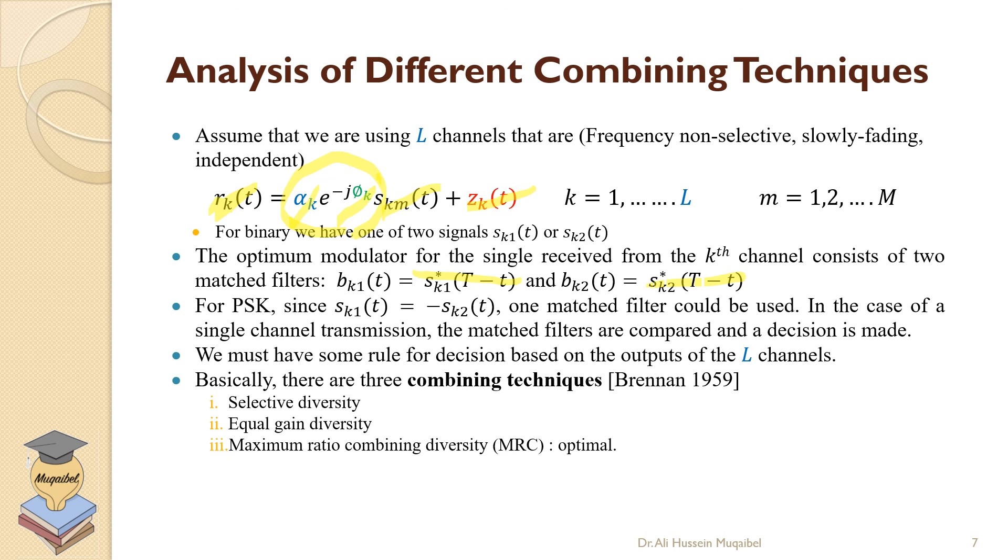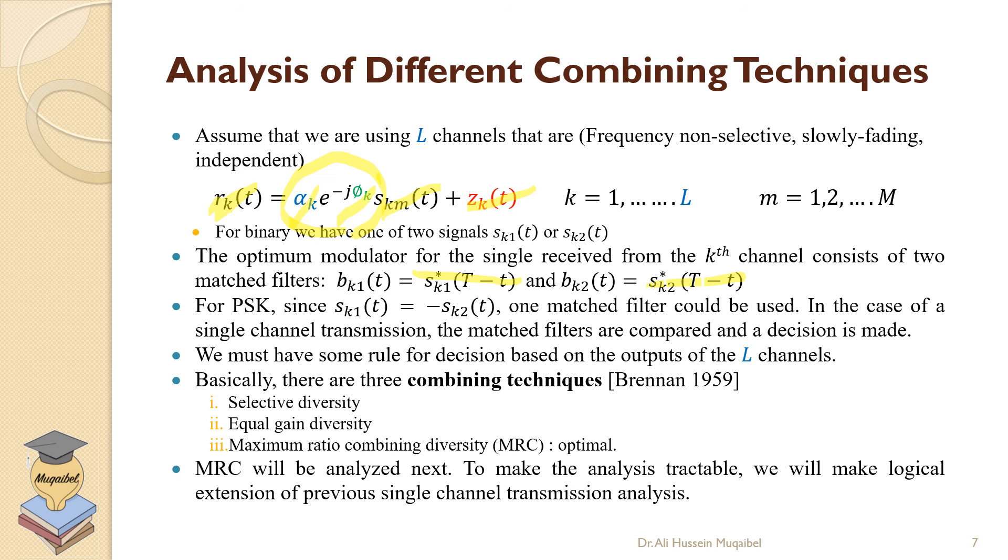We have the maximum ratio combining to be the optimal technique. Among selective diversity, there is something called switching diversity, and we're going to see all of this.